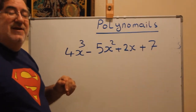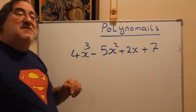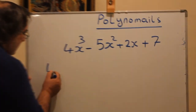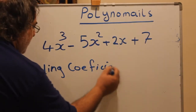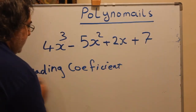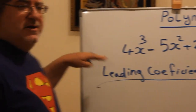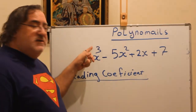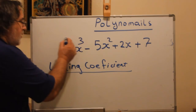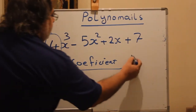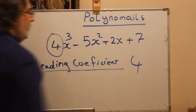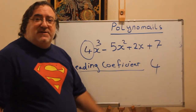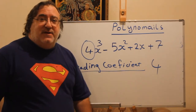Now if you are asked: what is the leading coefficient? Once you organize the polynomial in descending order, look at the highest power — which is 3 here. The coefficient of that term is the leading coefficient, which is 4. I hope the whole lesson on polynomials has been made easy for you. Thank you very much.